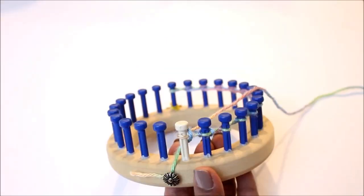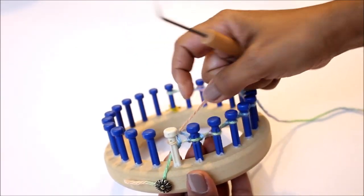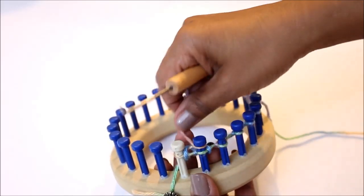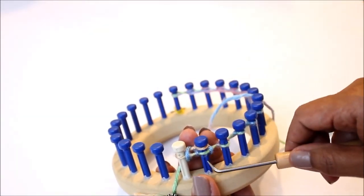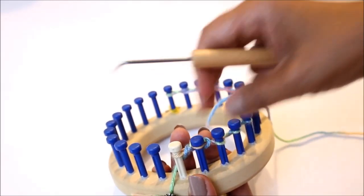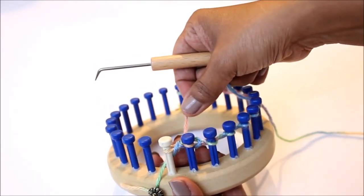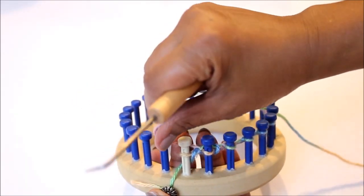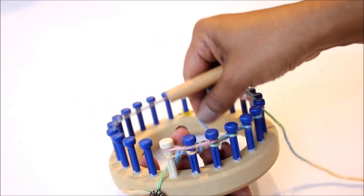For row one you're going to slip the first peg and start at peg two and you're going to e-wrap that peg number two. Knit off and then you're going to take the working yarn from behind and you're going to go back to peg one and wrap pegs one, two, and three.